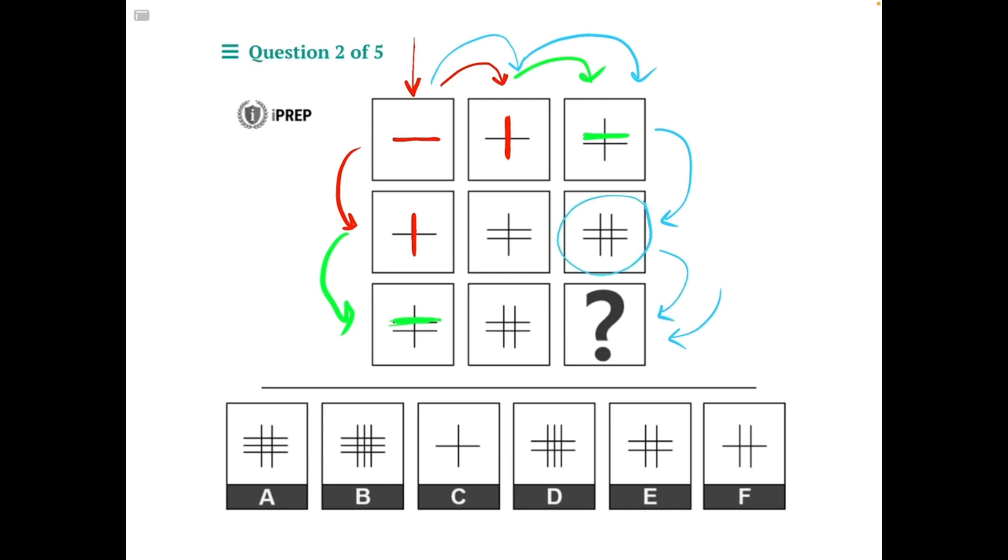So if we take this shape right here and add an additional horizontal line, that should be our missing element, and that perfectly matches answer choice A.